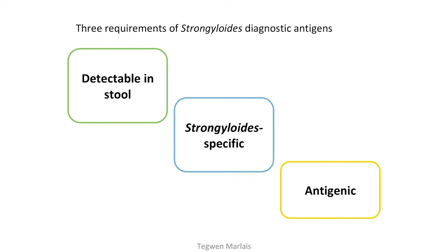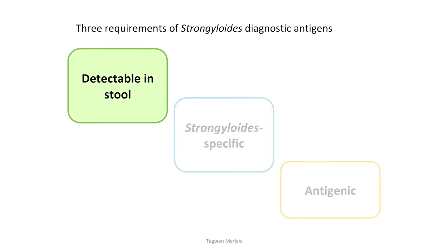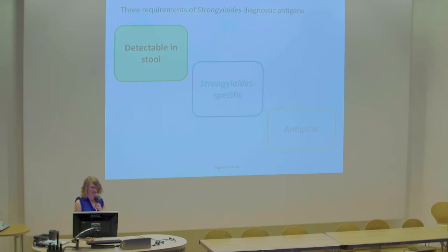I started off with three requirements for this diagnostic antigen. I wanted it to be detectable in stool, Strongyloides-specific so that there's no cross-reactivity with other species, and antigenic so that we can raise good antibodies to it. Starting with the methods I used for the first criteria — finding something detectable in stool.